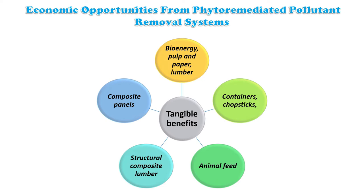Regarding economic opportunities from phytoremediation, tangible benefits include bioenergy, pulp, paper, and lumber. The biomass generated from phytoremediation can be used for energy generation, pulp and paper production, lumbering, containers, chopsticks, animal feed, structural composite lumber, and composite panels.